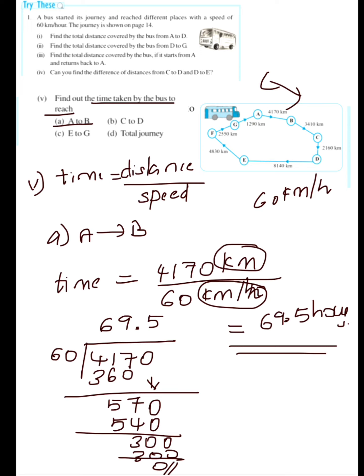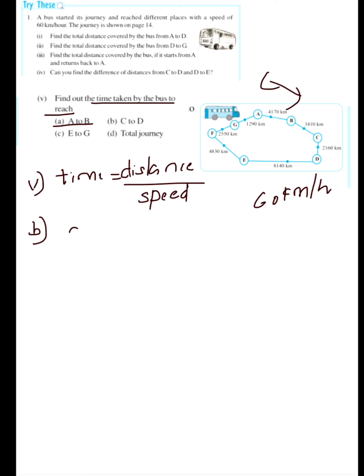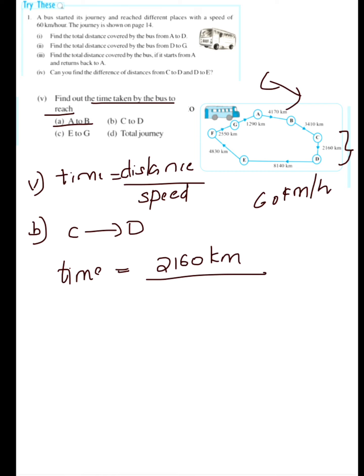Now let's see part B: find the time taken by the bus to reach from C to D. The time taken equals distance divided by speed. The distance from C to D is 2160 km, divided by the speed of 60 km per hour. Now let's divide that: 2160 divided by 60.